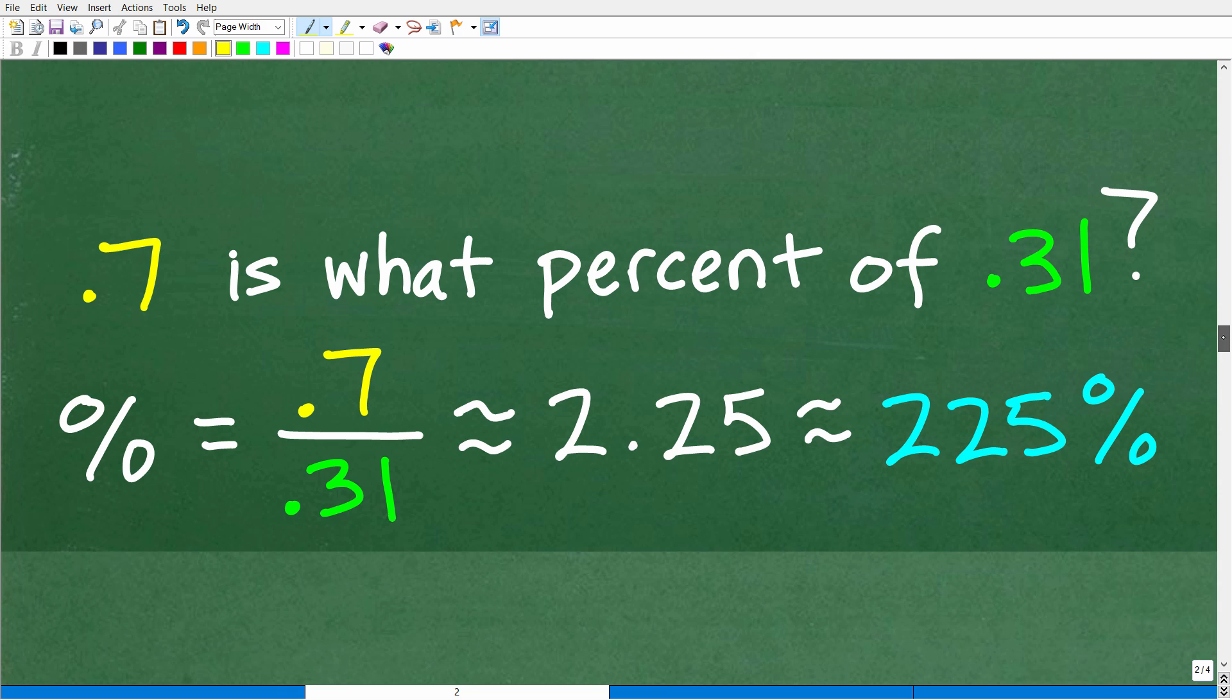Okay, so 0.7 is what percent of 0.31? Well, this is going to be the part, 0.7, and then 0.31 will be the whole. Now, you've got to be careful here because oftentimes when you're dealing with percent problems, the part out of the whole setup, sometimes the part is bigger than the whole. In other words, when you're dealing with problems that are like something's 120% of something else or 200%. So don't get confused because that can definitely happen, and that's going to happen in this particular problem.